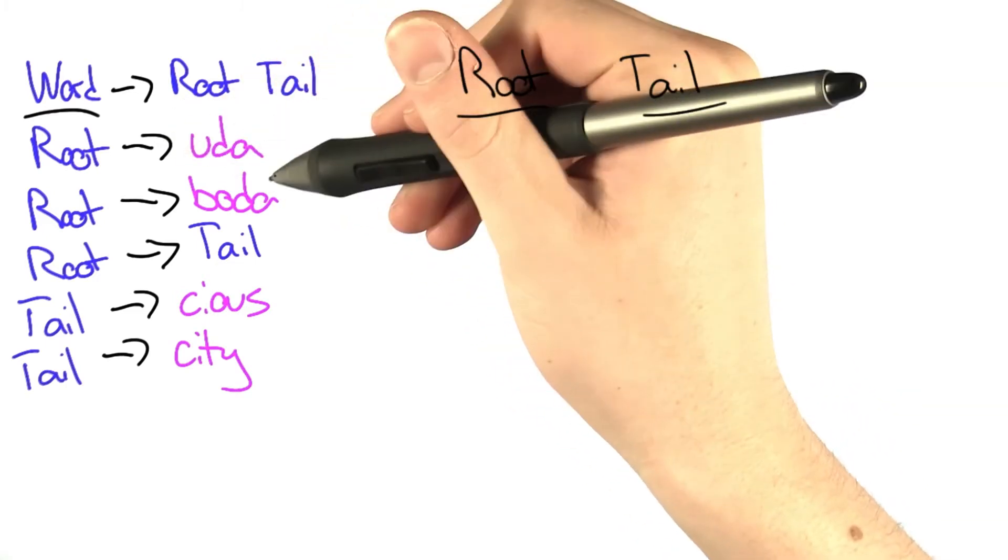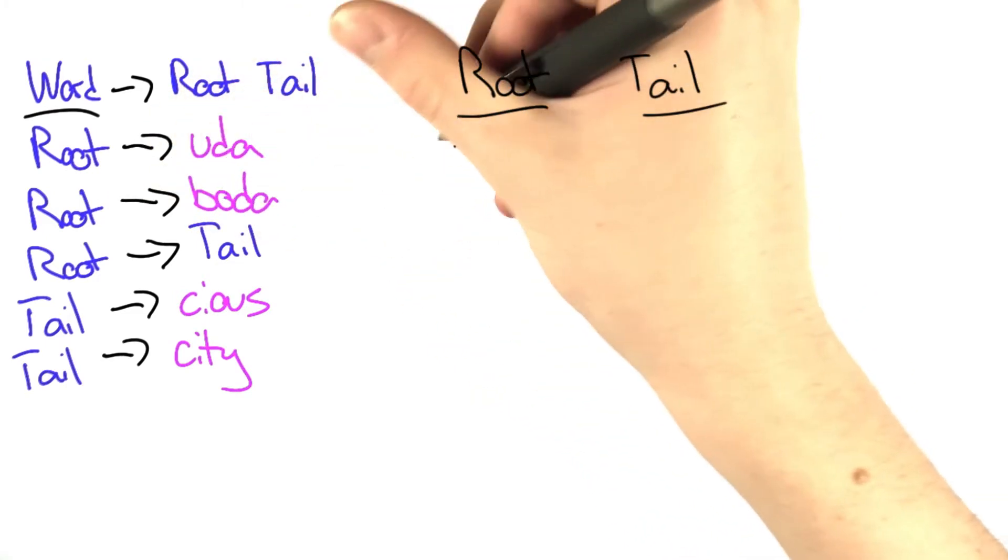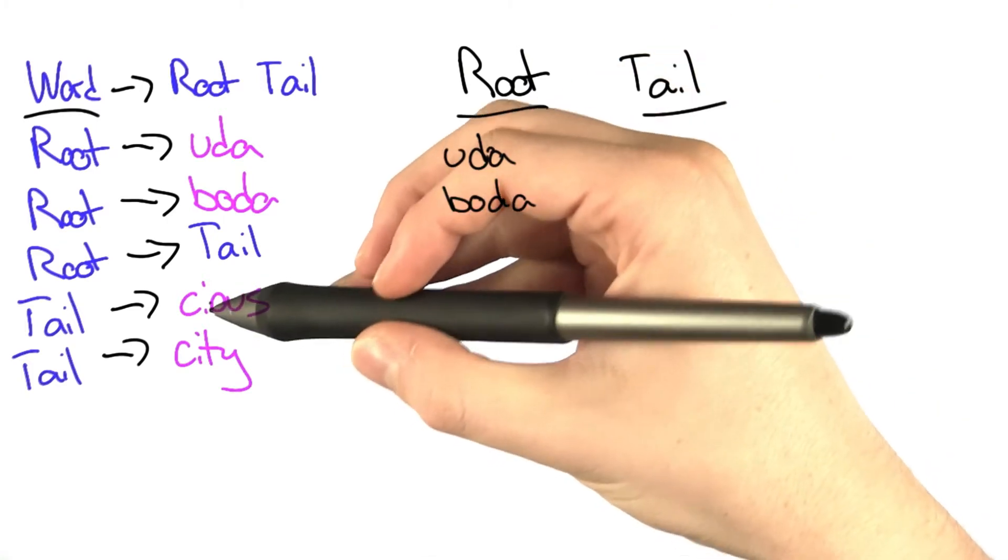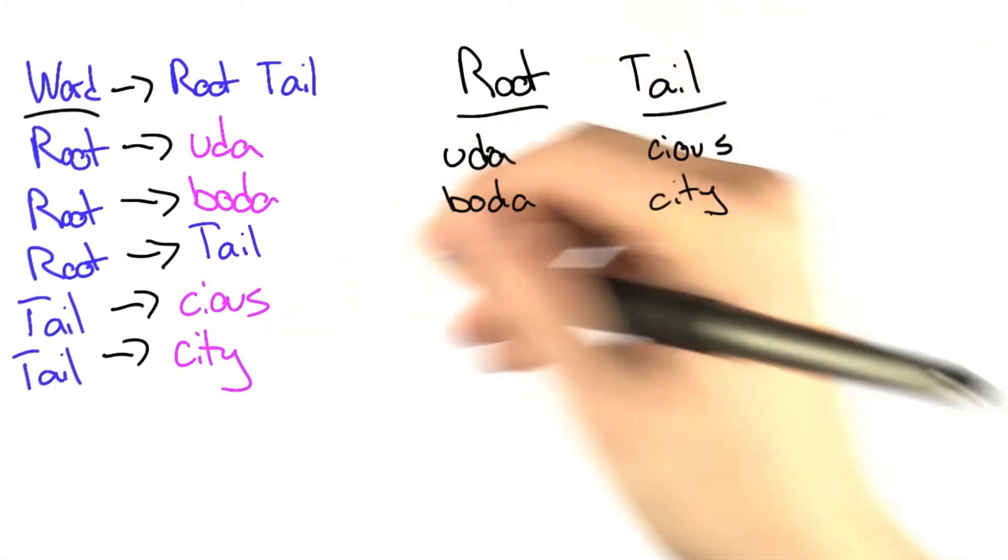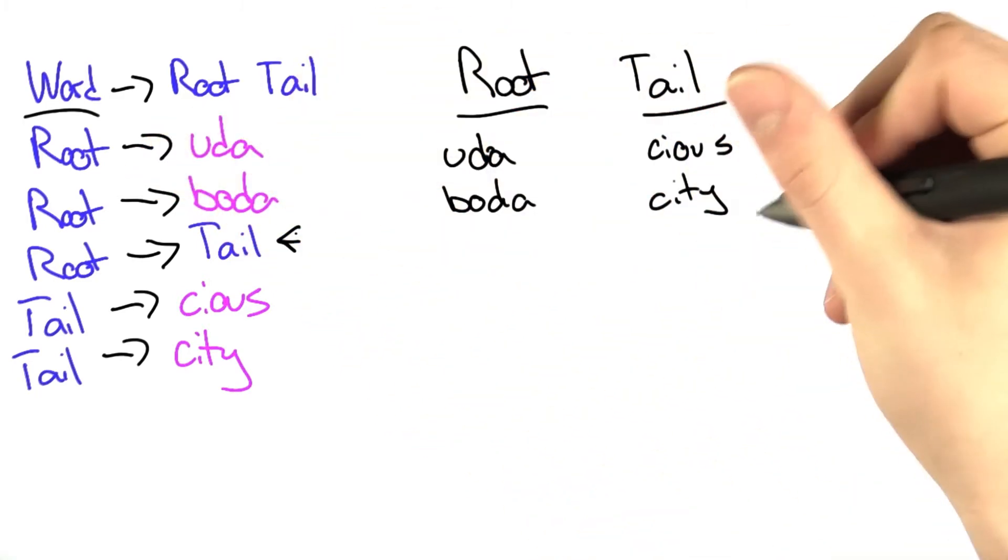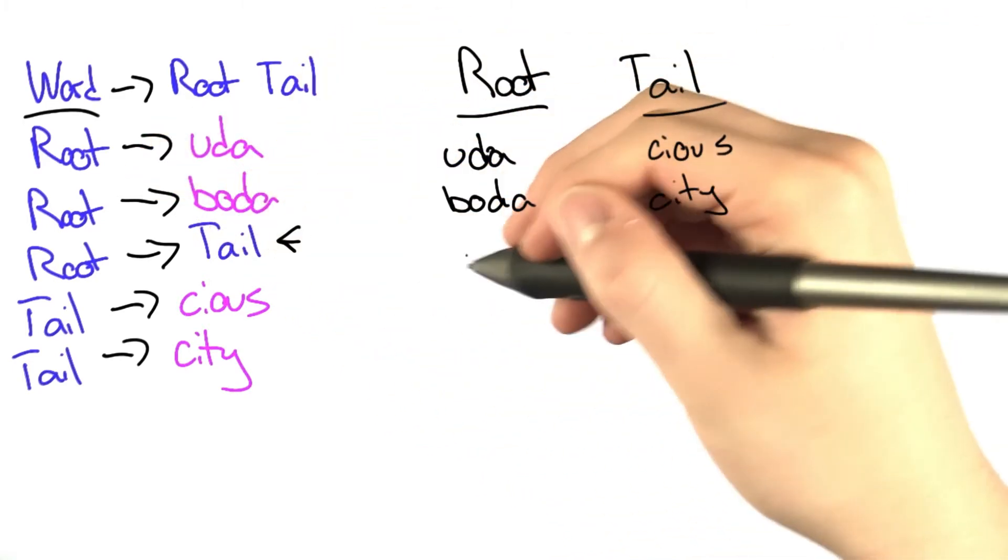So a root can be Uda and also Boda. Tail can go directly to Cis and City. But we should also look at this substitution rule that has root going directly to tail.